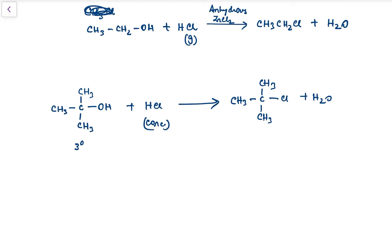In the case of one-degree or two-degree alcohols, we need to use HCl and anhydrous ZnCl₂. Anhydrous ZnCl₂ acts as a Lewis acid, which forms a coordination bond with the oxygen atom of alcohol, leading to the cleavage of the bond between carbon and oxygen, which helps in the formation of the carbon-chlorine bond.